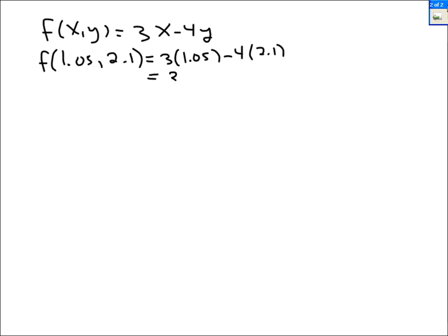So like always with differentials, you could approximate things. For example, suppose f of x,y is 3x minus 4y. And we want to approximate f of 1.05 comma 2.1. Well, first let's actually calculate it exactly. It's 3 times 1.05 minus 4 times 2.1, which is 3.15 minus 8.4, which is negative 5.25. That's the exact answer.